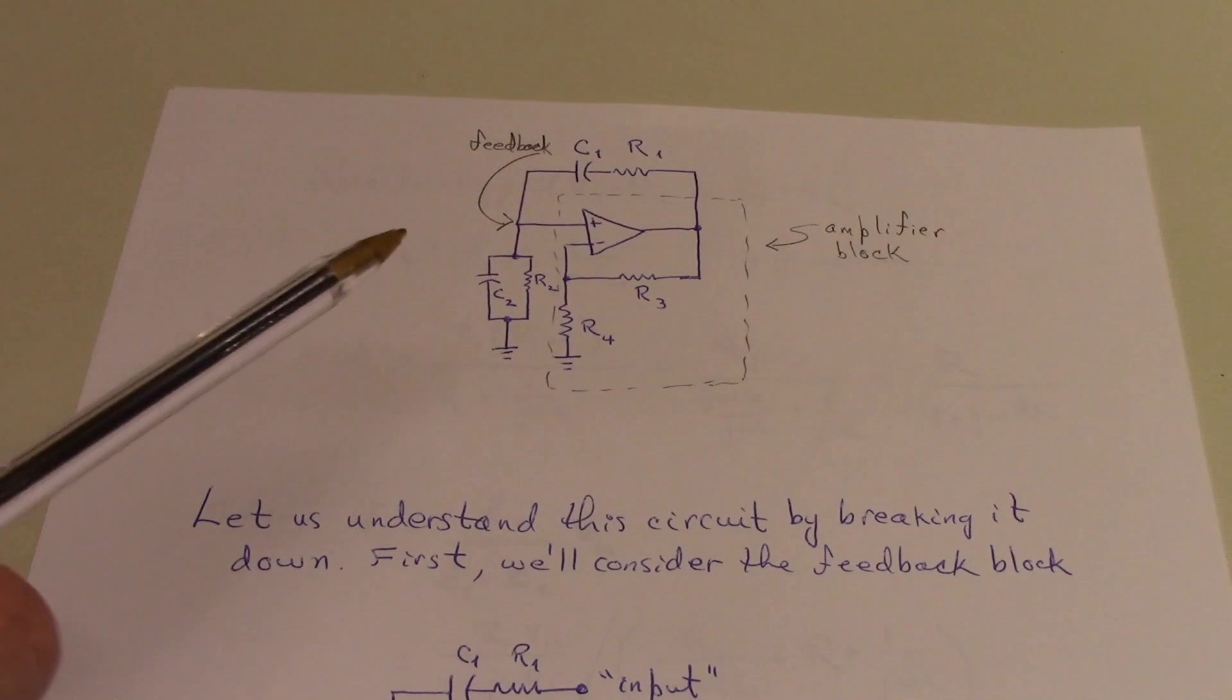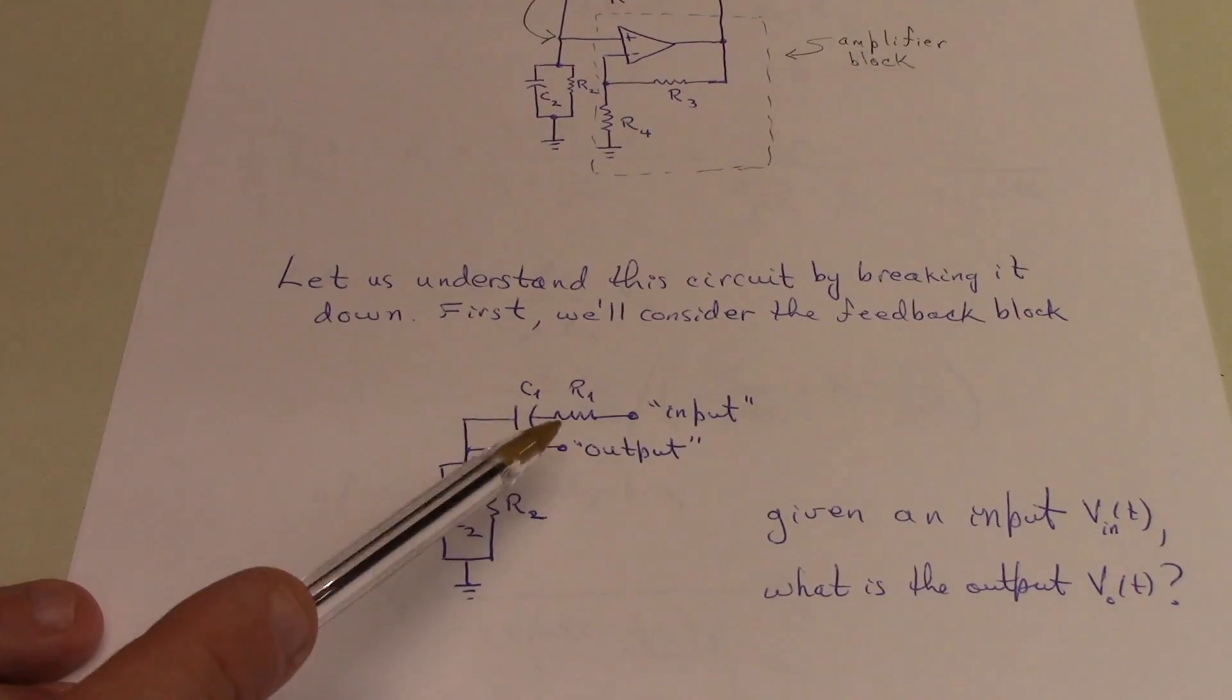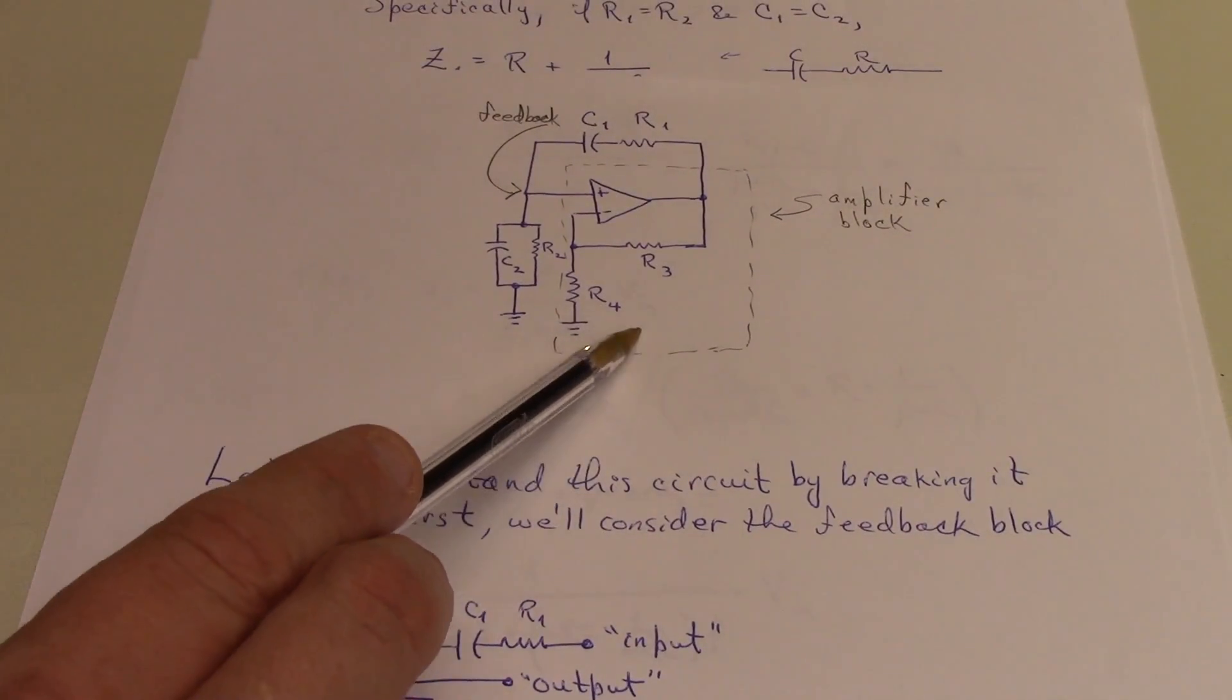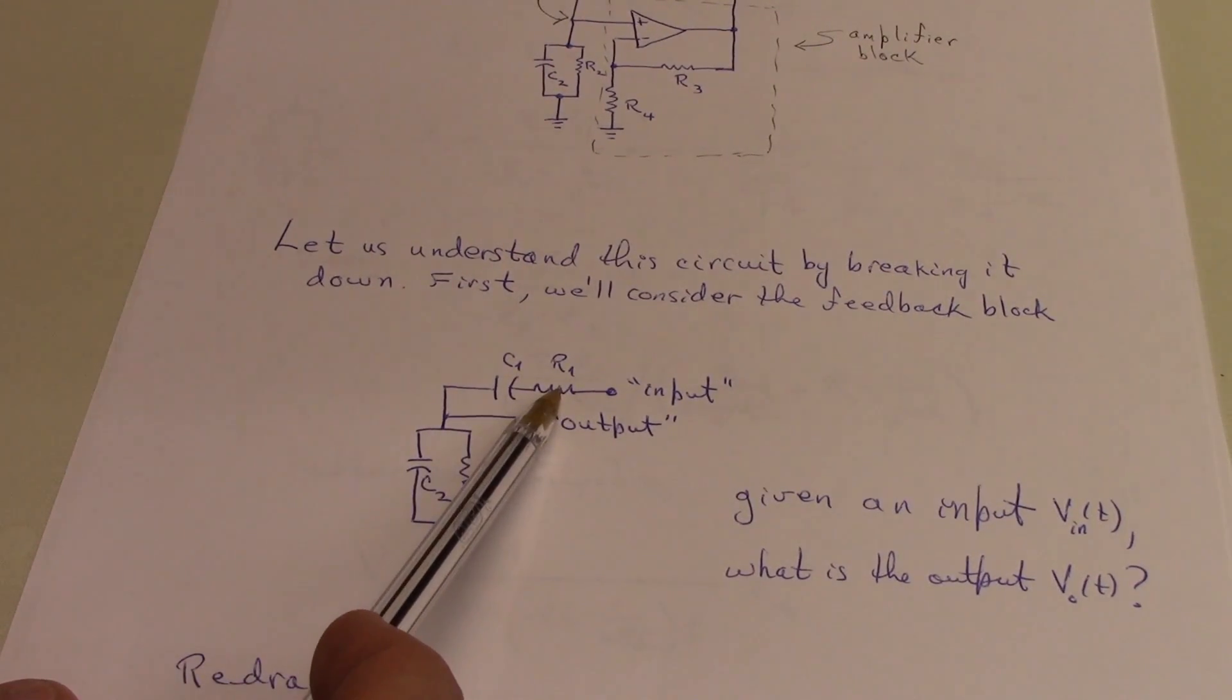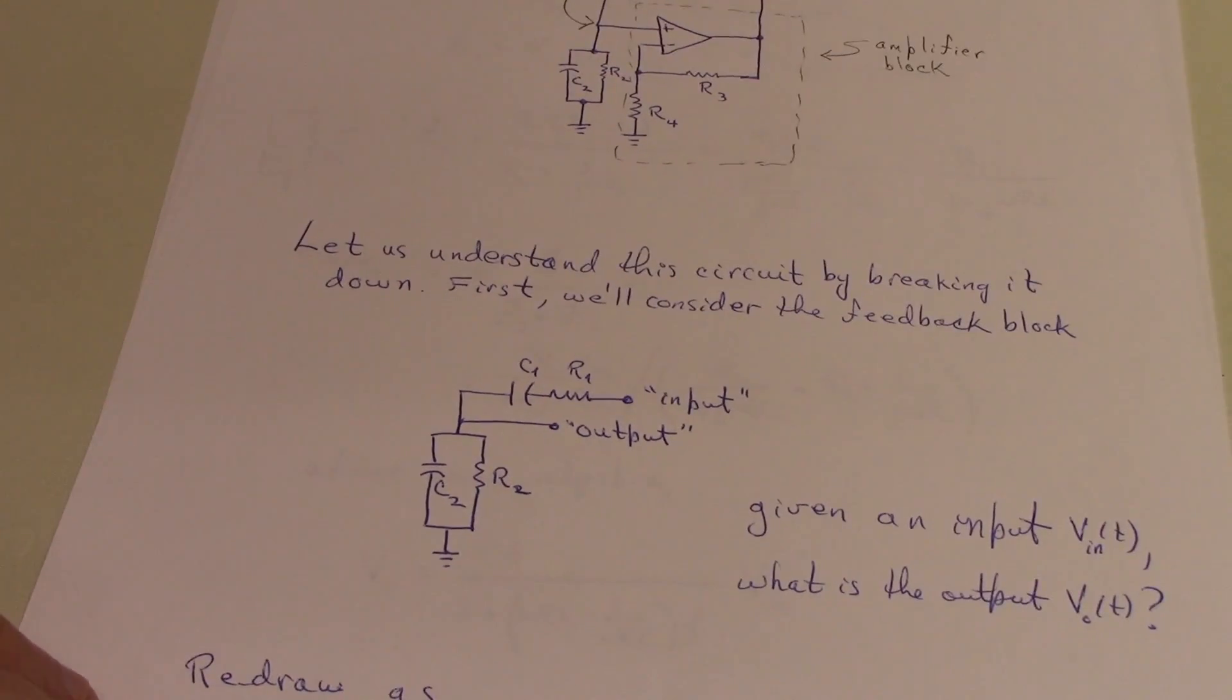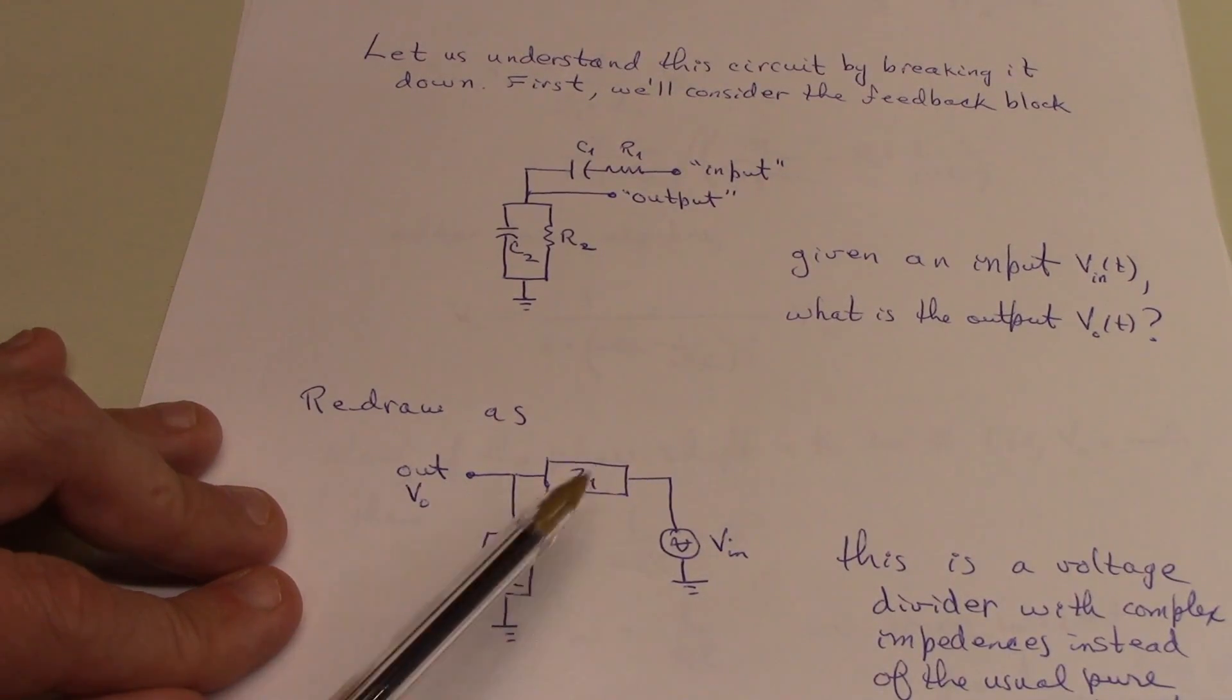So you recall that we wrote down the equations for this circuit by modeling the circuit in this way. We took out the amplifying branch and just looked at the input and output branch. We have this series RC combination and a parallel RC combination, and the equations for those circuits, those branches of the circuits, are just expressed in terms of these two impedances.